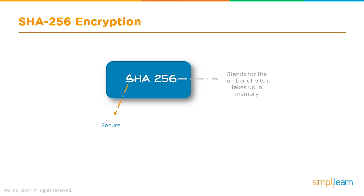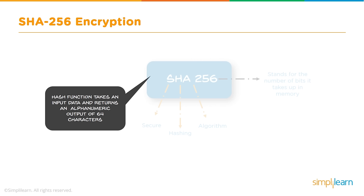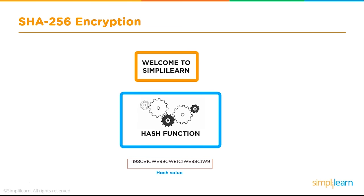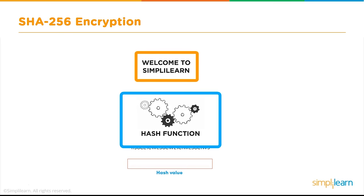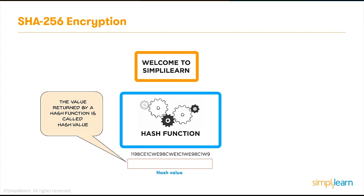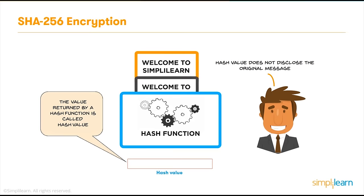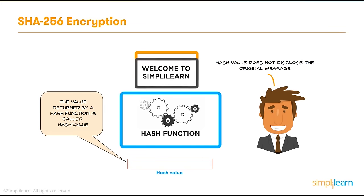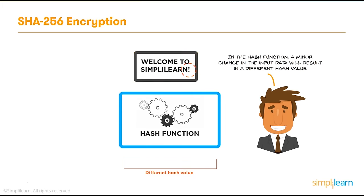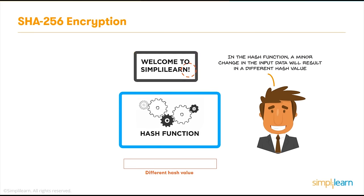SHA-256 stands for Secure Hashing Algorithm, indicating the 256 bits it takes up in memory. The hash function takes input data and always returns a 64-character alphanumeric output of 256 bits. For example, feeding 'welcome to Simply Learn' always returns the same unique 256-bit value. It is impossible to decode the original message from the hash value. A minor change in input data results in a completely different hash value.